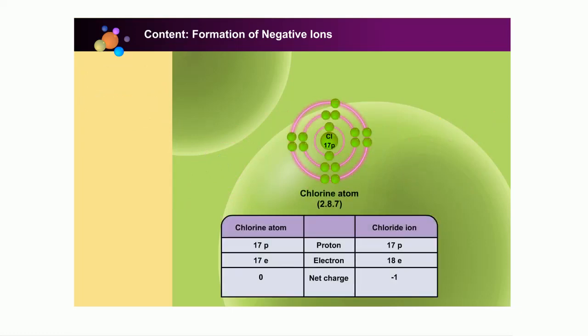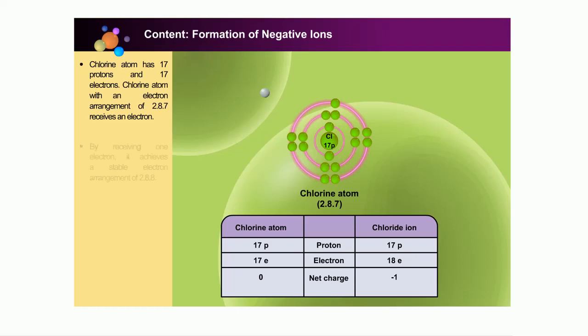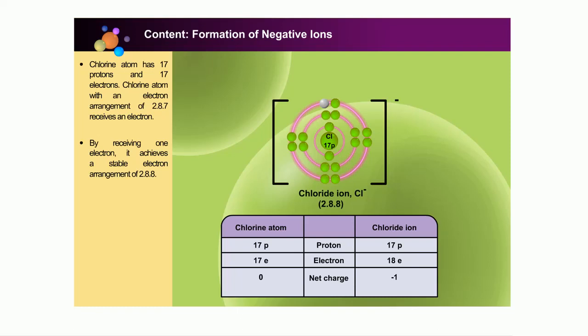Let's see some examples. Chlorine atom has an equal number of protons and electrons, which are 17 protons and 17 electrons. The chlorine atom with an electron arrangement of 2-8-7 has a high tendency to receive 1 electron. By receiving 1 electron, it achieves an octet with a stable electron arrangement of 2-8-8. Thus, the chlorine atom now has 17 protons and 18 electrons — that is, it gains a net negative charge of 1 and becomes a negative ion.